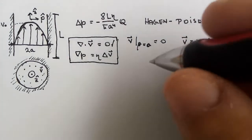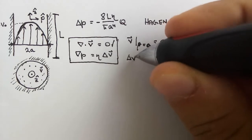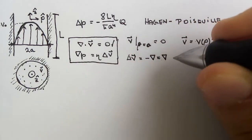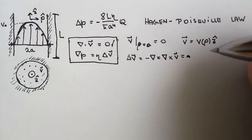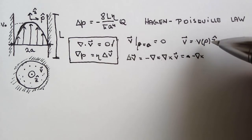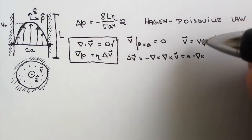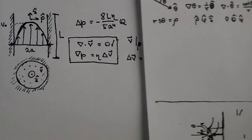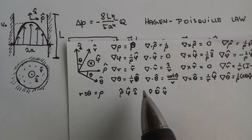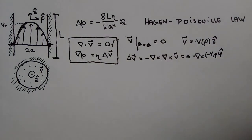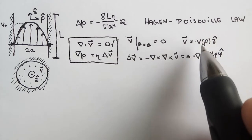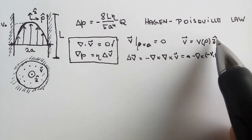I will use the same trick as before: compute the Laplacian using the identity Laplacian of V equals the gradient of divergence minus curl curl of V. This gives minus curl curl of V. The curl of V(rho)*z-hat involves nabla acting on V(rho), giving dV/dRho times rho-hat cross z-hat, and rho-hat cross z-hat equals minus phi-hat. The second term vanishes because the curl of a constant z-hat field is zero.